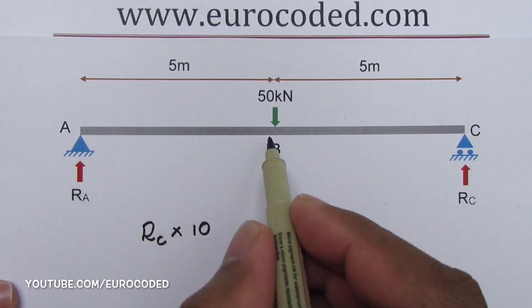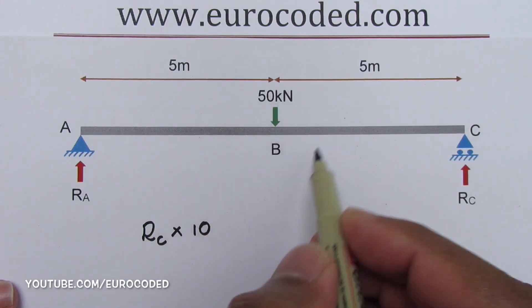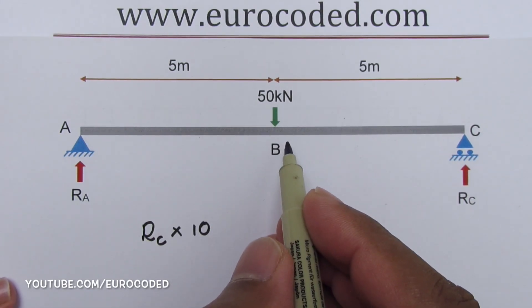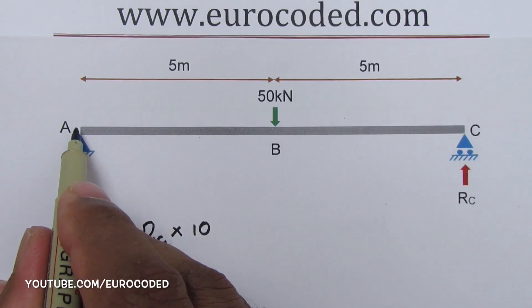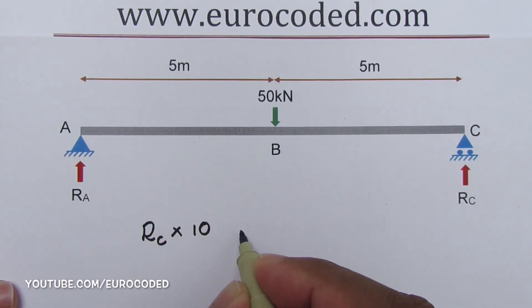There's one other force which is this 50 kilonewton applied force, and this force is causing a clockwise moment and the lever arm is 5 meters. So this is equal to...